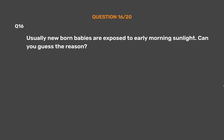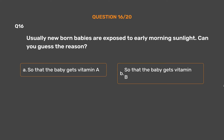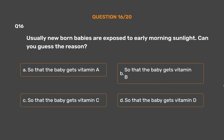Question number 16. Usually newborn babies are exposed to early morning sunlight. Can you guess the reason? Option A - So that the baby gets vitamin A. Option B - So that the baby gets vitamin B. Option C - So that the baby gets vitamin C. Option D - So that the baby gets vitamin D.